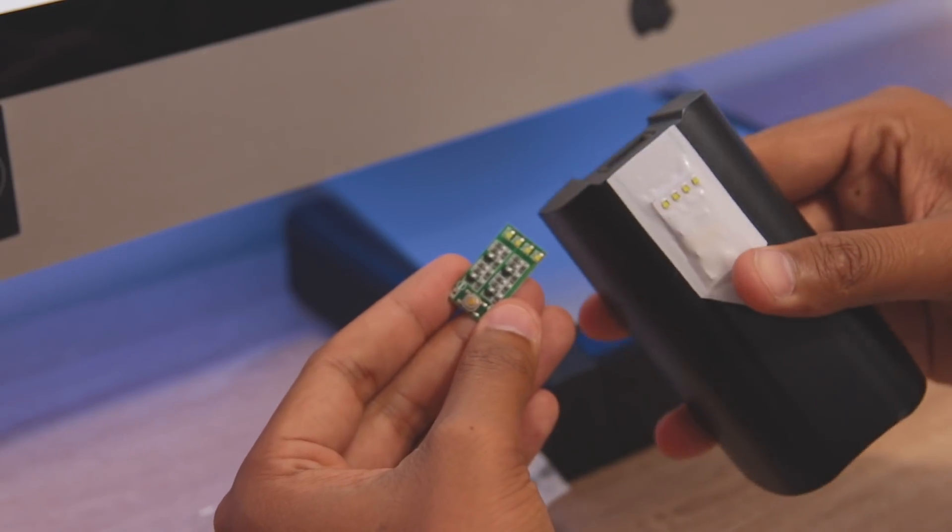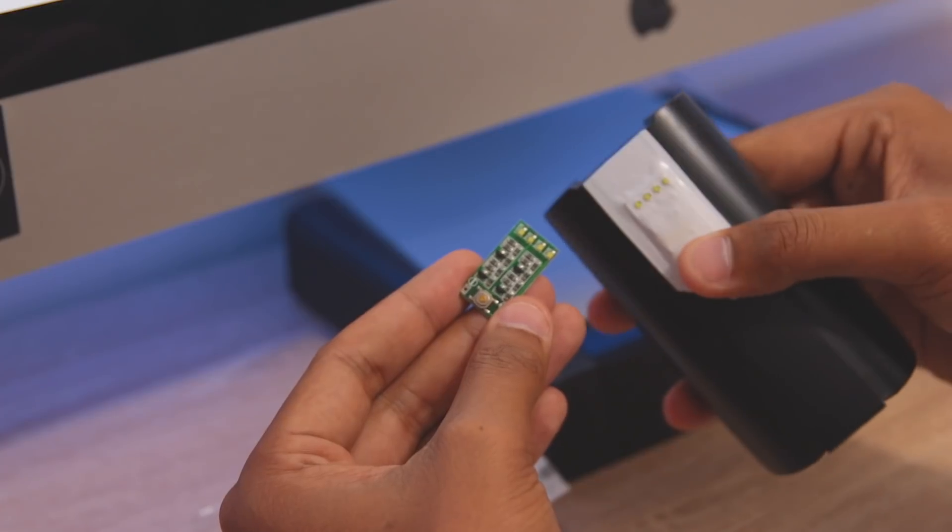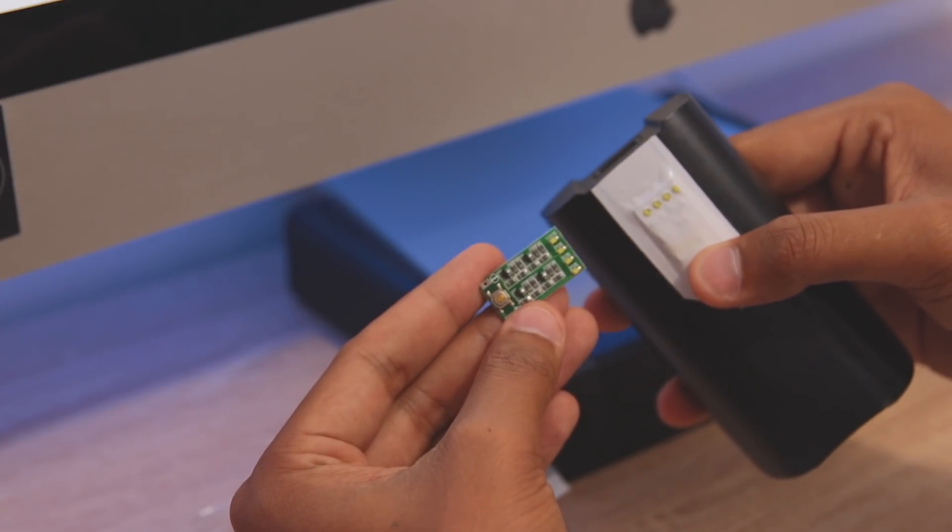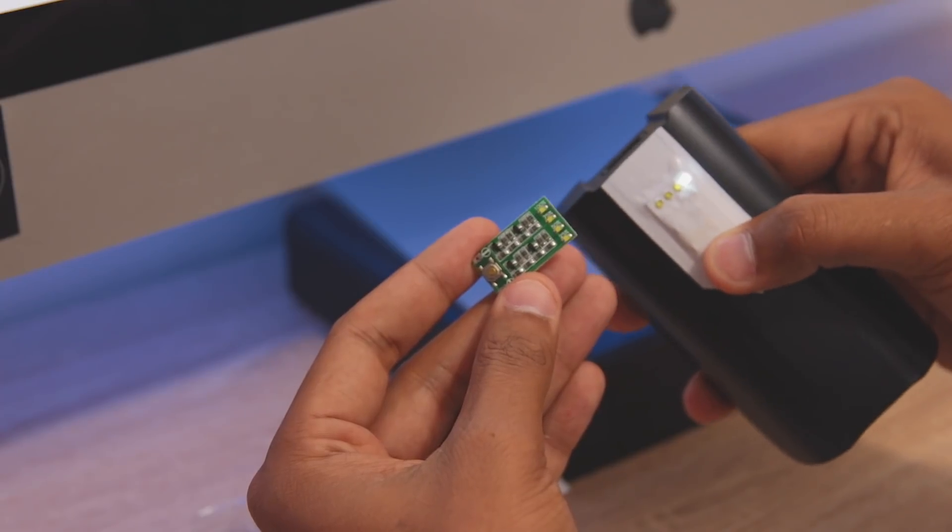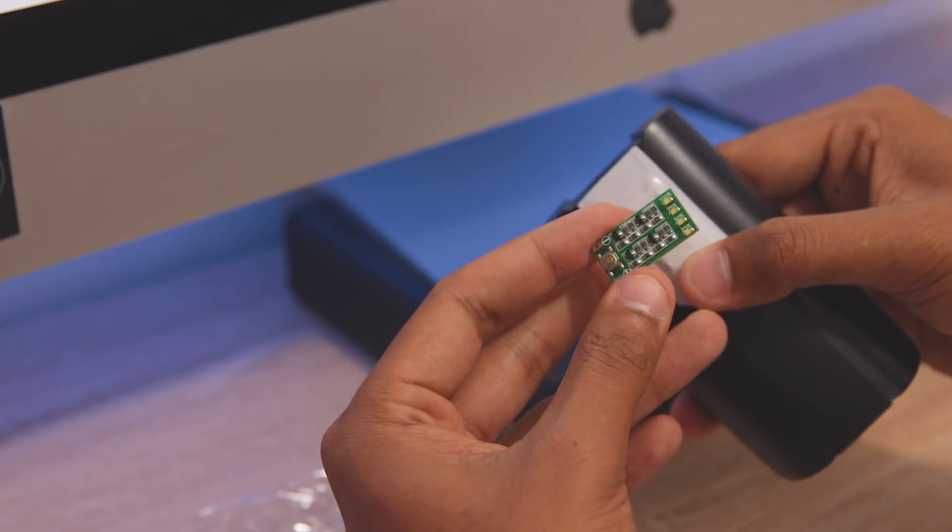For example, this battery I've just drained it out so it is below 25%, so it will only show one light, and at fully charged it will show four lights.